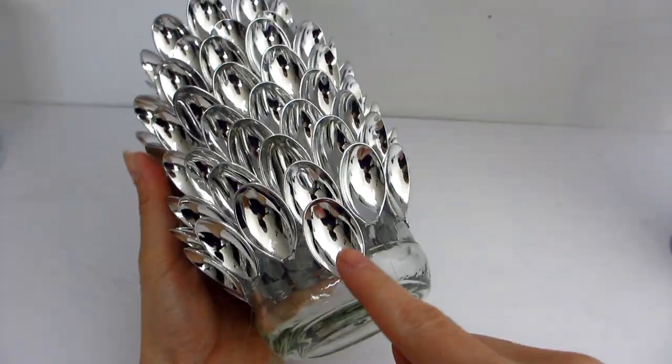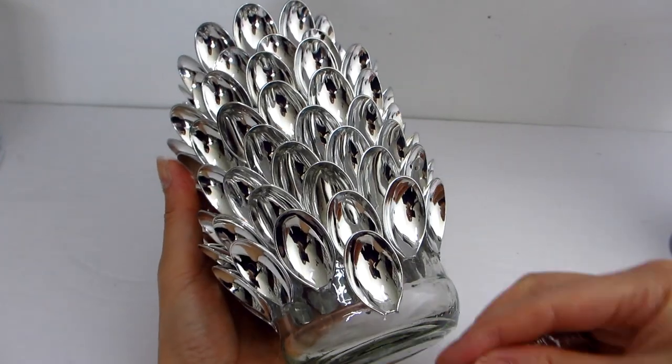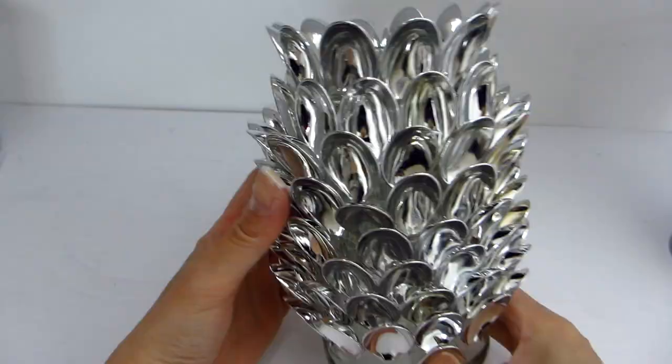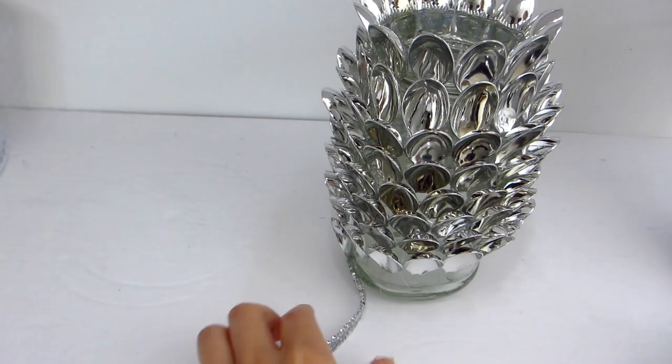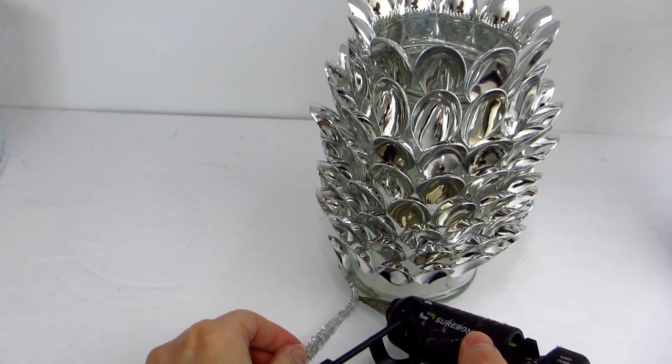Here you can see I'm nearing the bottom of the glass jar and I have decided to add a silver crystal gem ribbon to the very bottom. This will add a subtle but glamorous design element to the vase when we are done.